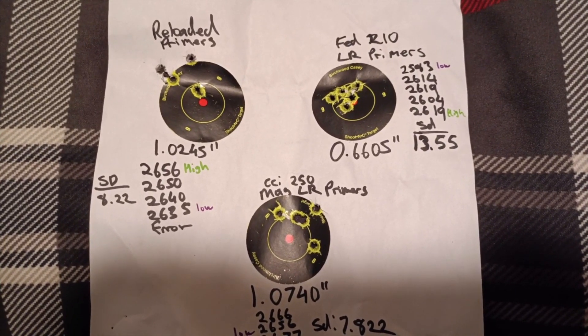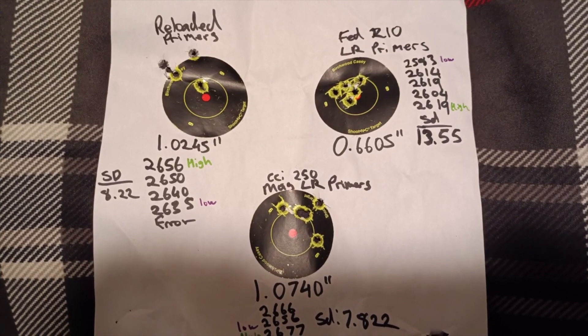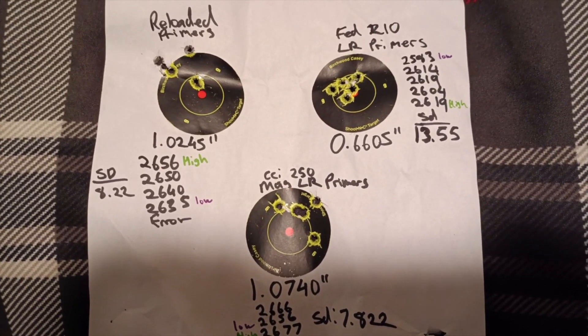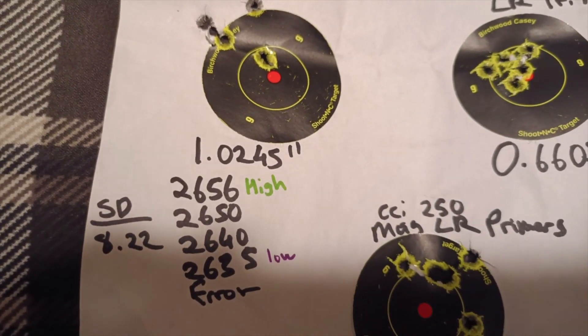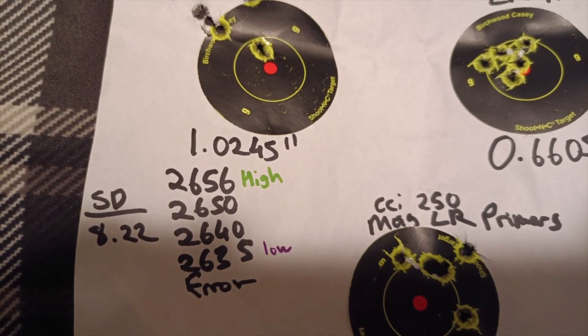But I wanted to focus on what the numbers were and how good the standard deviation was of the reloaded primers and compare the velocities to regular primers and Magnum primers. So that's the first group right there with my reloaded primers and you can see the SD is very good over there and the high is 2656 and the lowest 2635.